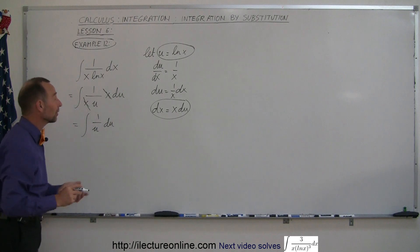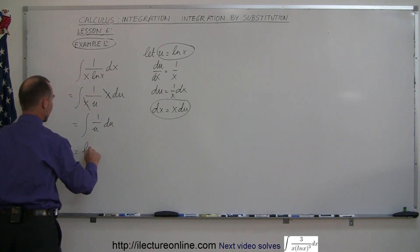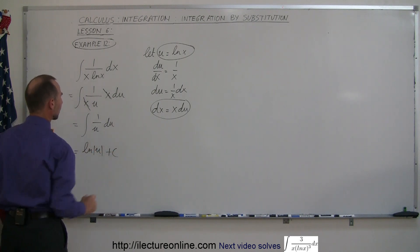We know how to integrate that. That's a classic form. So this is equal to the natural log of u. Of course, we need absolute value signs plus a constant of integration.